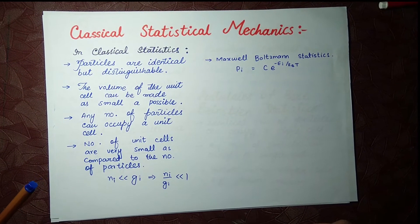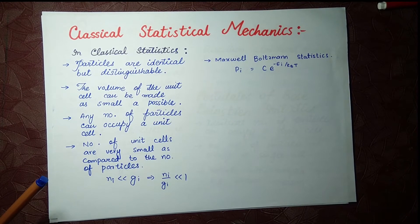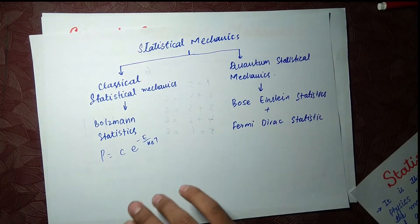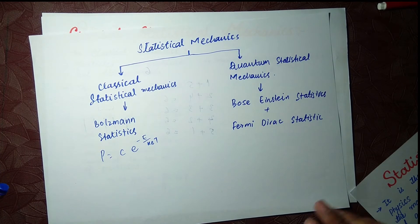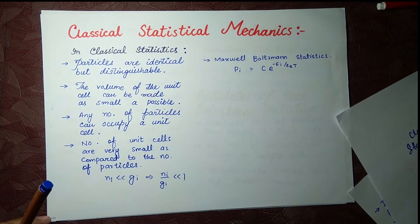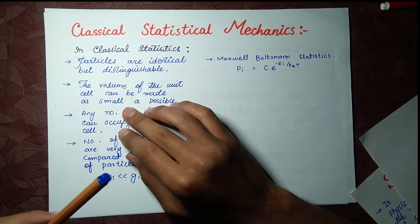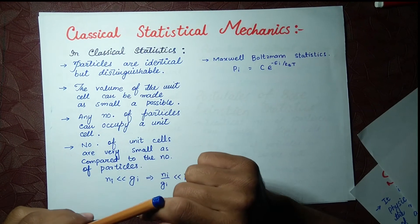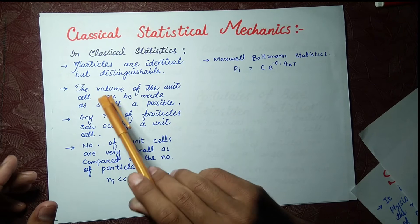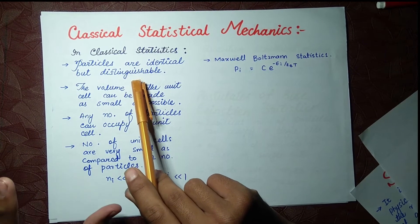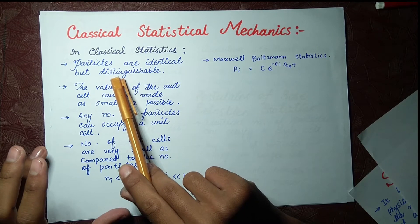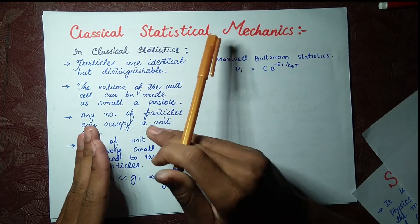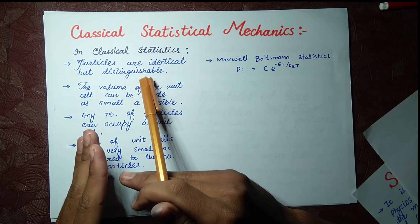Welcome back to Learn Daily Physics. We previously discussed statistical mechanics, and now we are going to cover classical statistical mechanics. In classical statistical mechanics, particles are identical and distinguishable — they are similar but we can distinguish them, labeling them as A and B. Whereas in quantum statistical mechanics, we cannot distinguish them; they are indistinguishable.